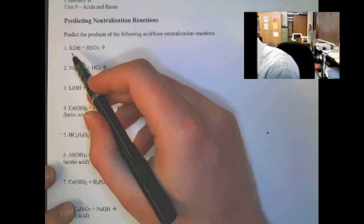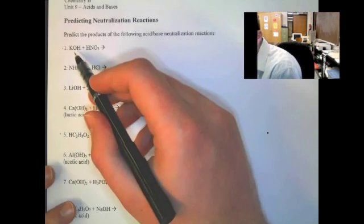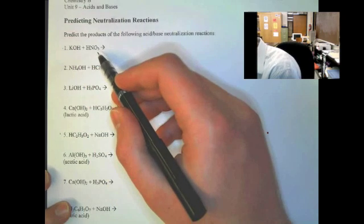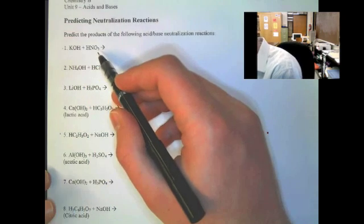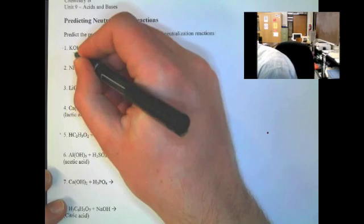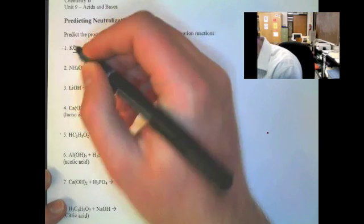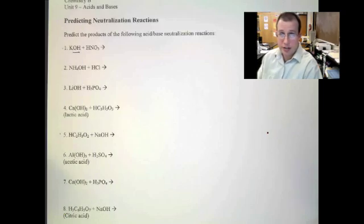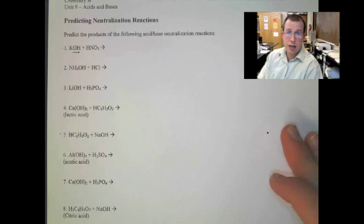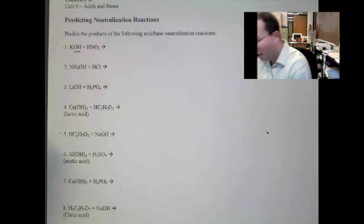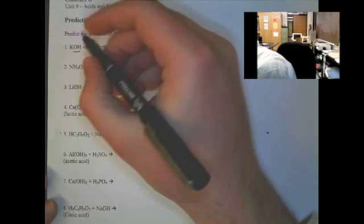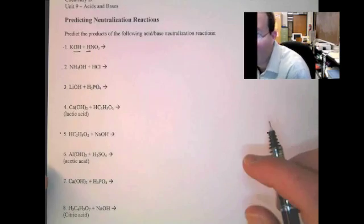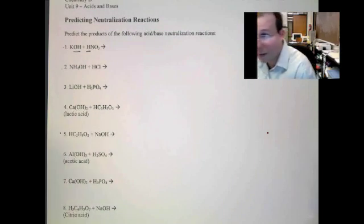What we're going to be looking at first: we've got potassium hydroxide and nitric acid reacting. You can recognize potassium hydroxide as being a base because of the fact that it has hydroxide in it — OH. You can then look at nitric acid and notice that there's an H out front in the chemical formula, which indicates that this is an acid.